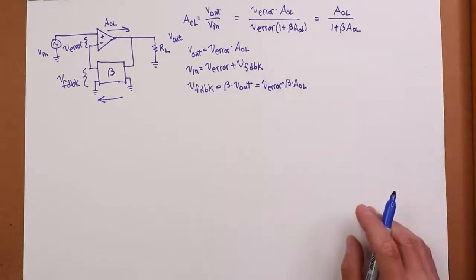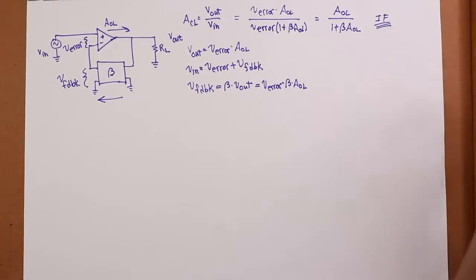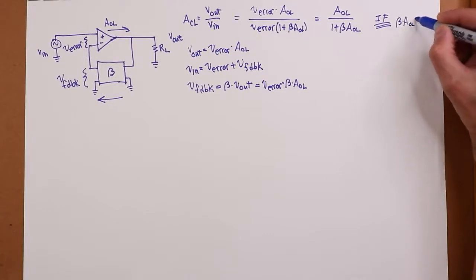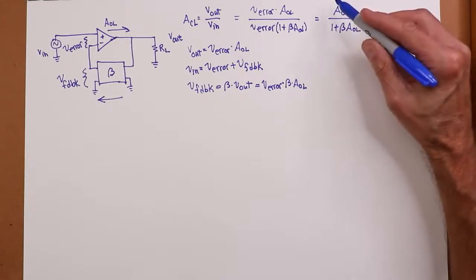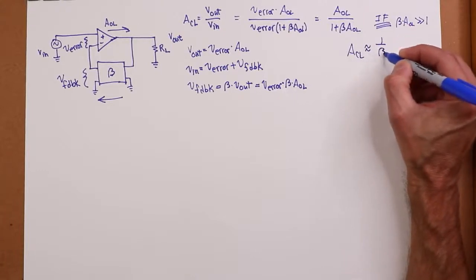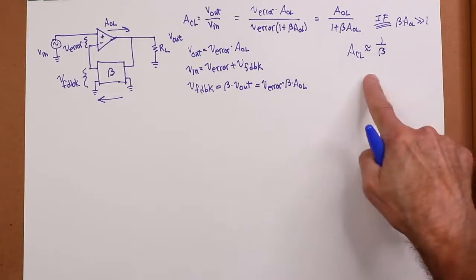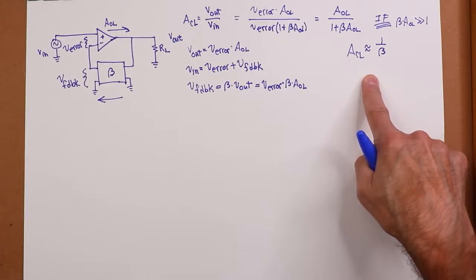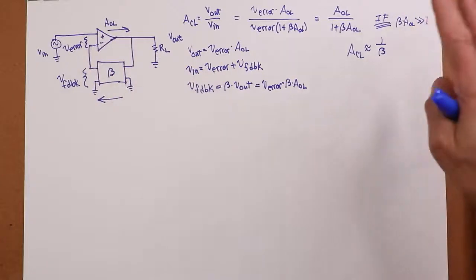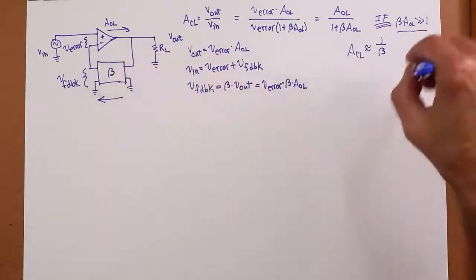But wait, it gets better. It gets much better. If, if we can say that beta AOL, that product, is much bigger than one, we can ignore the plus one over here, in which case we can cancel out the AOLs, and closed loop gain is approximately equal to one over beta. Well, that's nice because it's simple. But conceptually, it's really important. Because what it tells you is the open loop gain of the op-amp doesn't matter. As long as it's big enough, as long as it's big enough to guarantee this characteristic, I don't care how big it is. The feedback network is what will control the system.